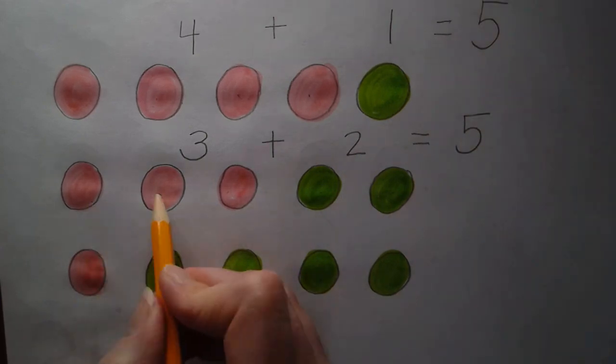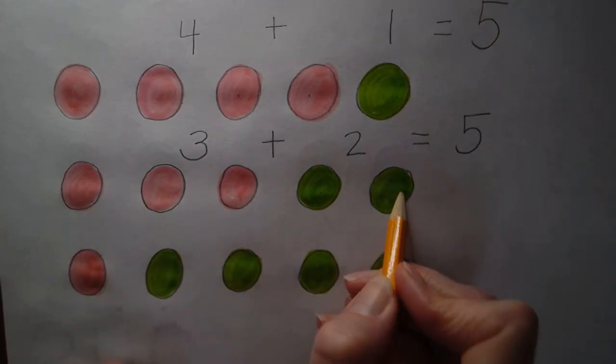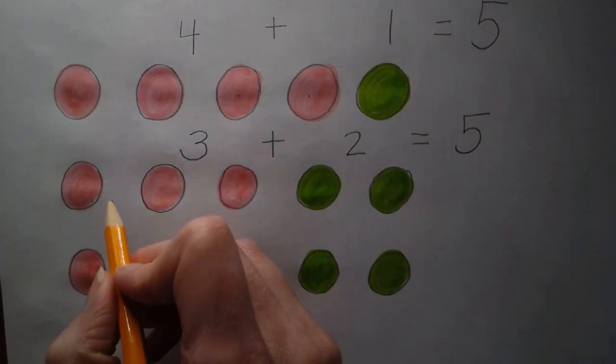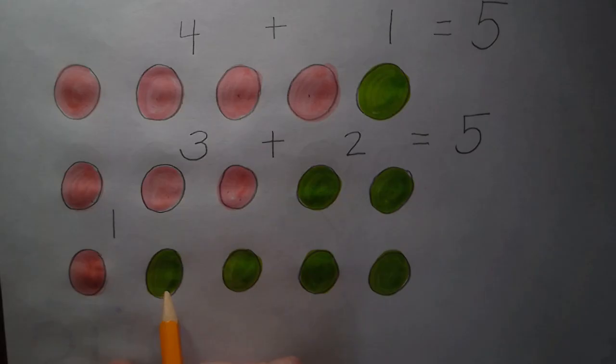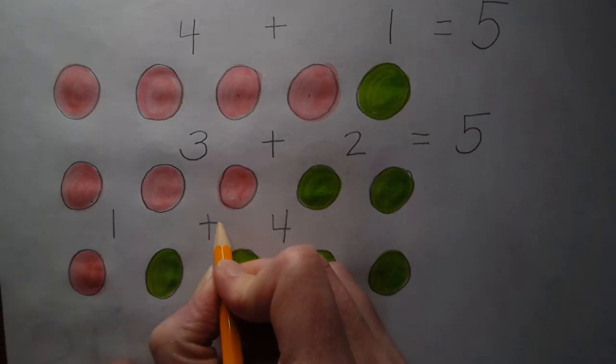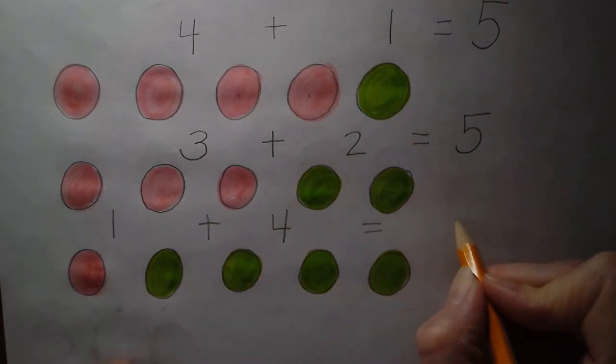Because remember, I did one, two, three, four, five circles. Let's look at this one on the bottom. How many pinks do I have this time? Oh, I've got one. And then let's see our greens. One, two, three, four. This side. And if I add those together, it will equal five.